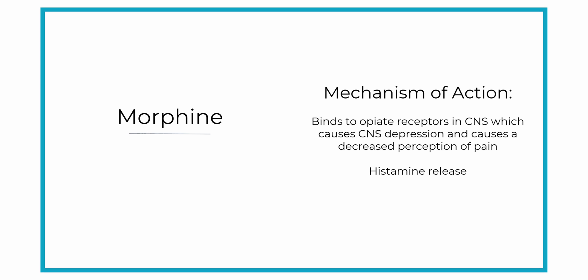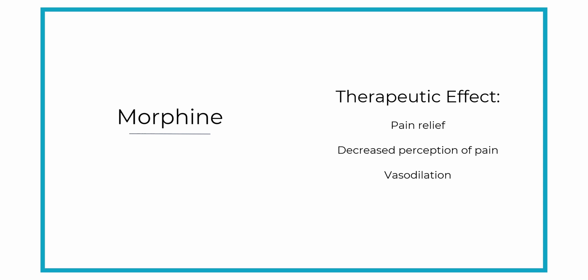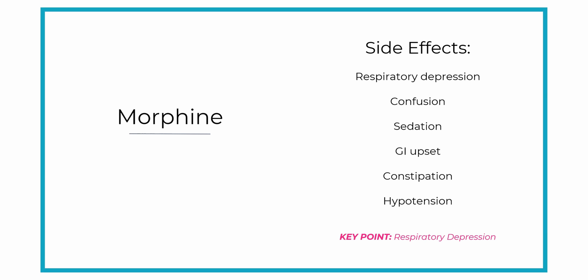Morphine also releases histamine throughout the body. Morphine's therapeutic effect is pain relief, and it also causes blood vessels to dilate — also known as vasodilation — because of the CNS depression and the general relaxation that occurs from it.